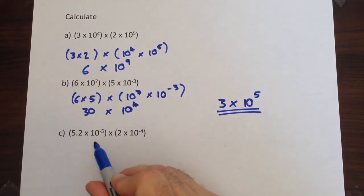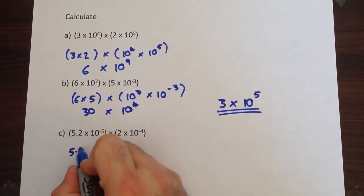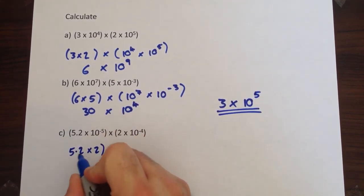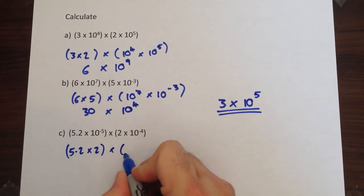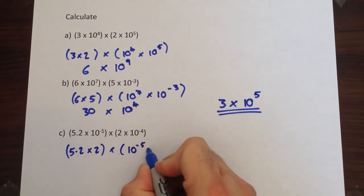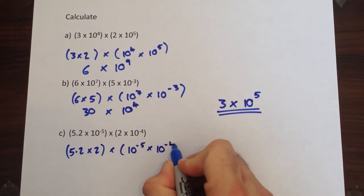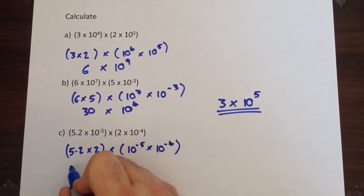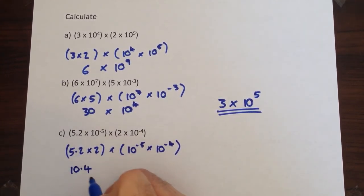Now let's look at how we would do this slightly more complicated one. We've got 5.2 multiplied by 2, and then we've got the powers: 10 to the negative 5 multiplied by 10 to the negative 4. So 5.2 times 2 is 10.4.